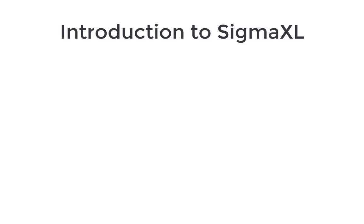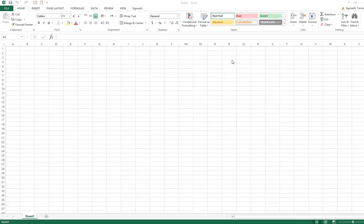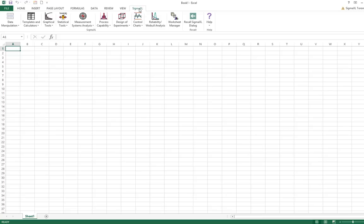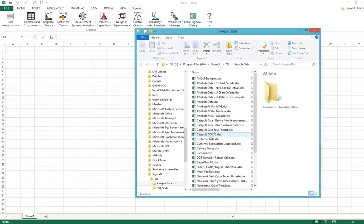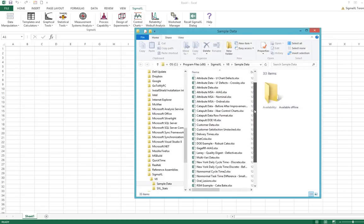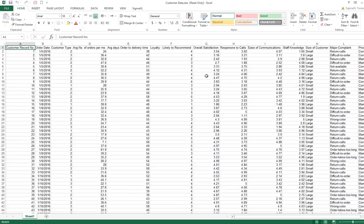SigmaXL will help you in your problem-solving and process improvement efforts by enabling you to easily slice and dice your data, quickly separating the vital few factors from the trivial many. This tool will also help you to identify and validate root causes and sources of variation which then helps to ensure that you develop permanent corrective actions and improvements.